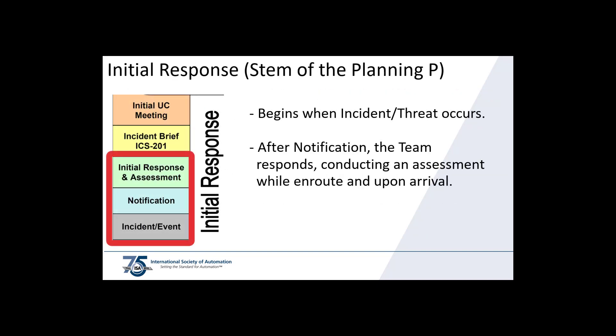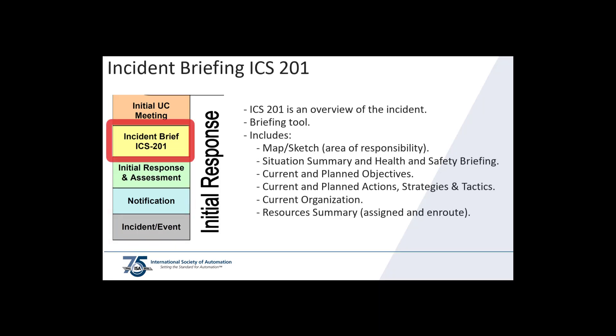The incident's initial response is captured in the stem of the planning P and begins when the incident occurs. After notification, the team responds conducting an assessment while en route and upon arrival. The ICS-201 Incident Briefing contains overview information about the incident and is used as a briefing tool. The ICS-201 includes: a map or sketch of the area of responsibility, situation summary and health and safety briefing, current and planned objectives, current and planned actions and strategies and tactics, current organization, and a resources summary of assigned and en route resources. It is usually filled out by hand but could be written on a blank sheet of paper.